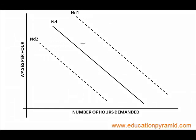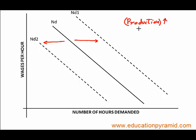In this diagram we can see the movement of the demand for labor curve. There are certain factors which shift the whole demand for labor curve towards the right side or towards the left side. For example, production — if there is an increase in production, meaning more goods and services are required in the country, then more goods will be produced, so production will increase.